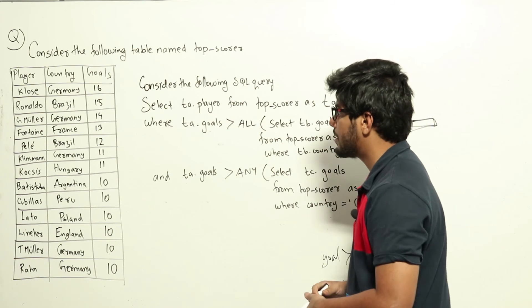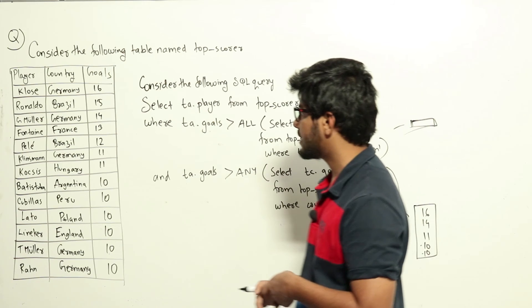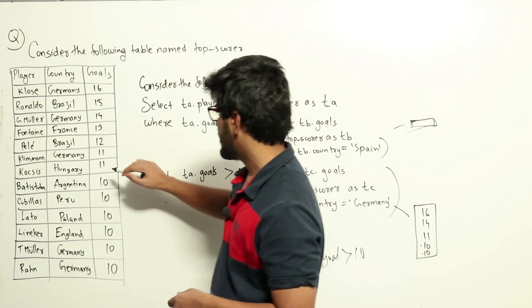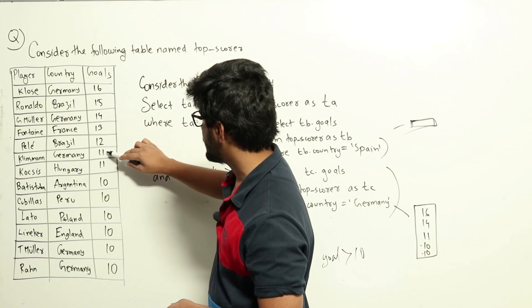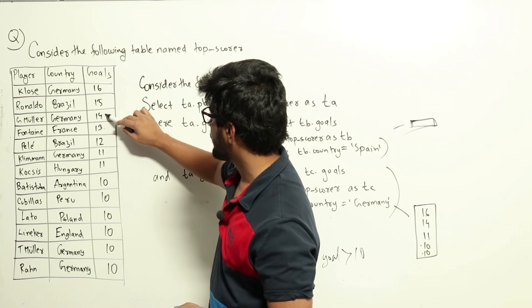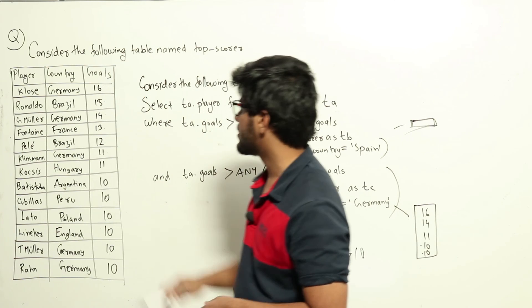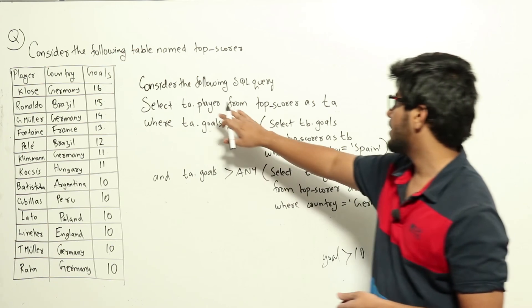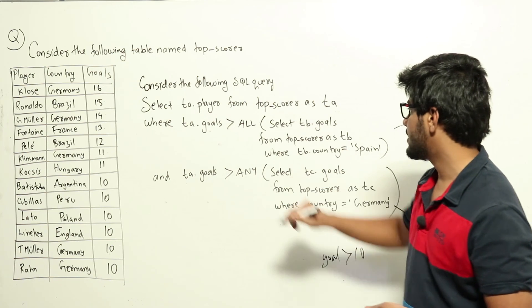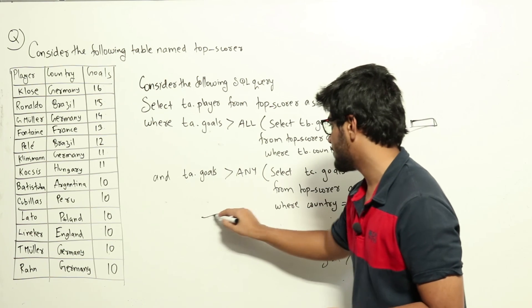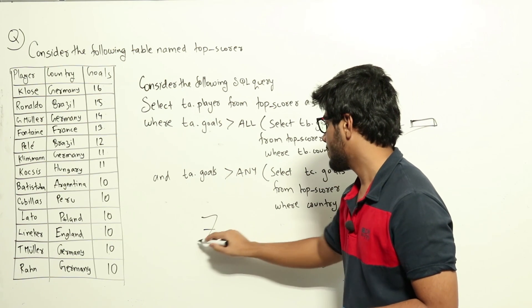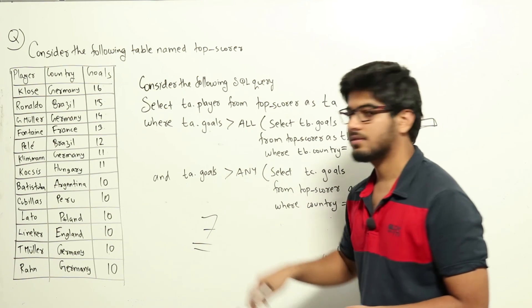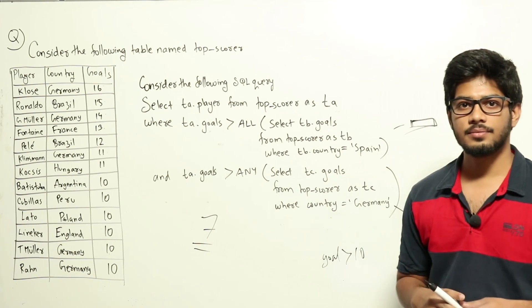So let's look at the table and count how many players have goals greater than 10. There are seven players having goals greater than 10. Therefore, SELECT ta.player will return seven rows — the answer is 7.